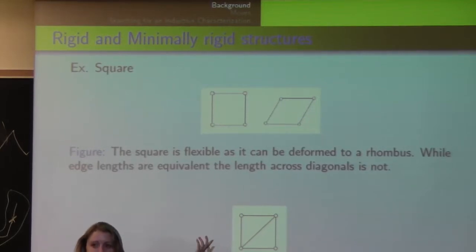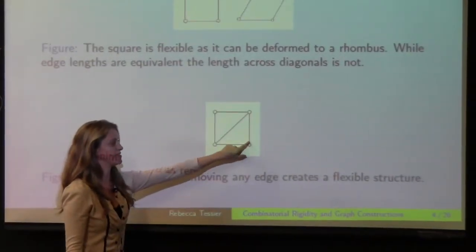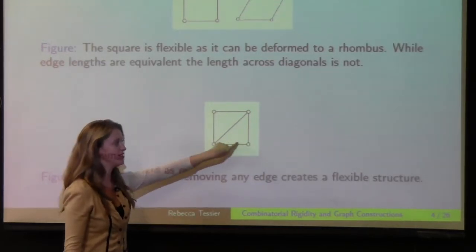But by removing this edge here, you're again back at the square, which is not a rigid structure. It's the same thing if you remove one of these edges, then you have a single edge here, and you can move this back and forth.